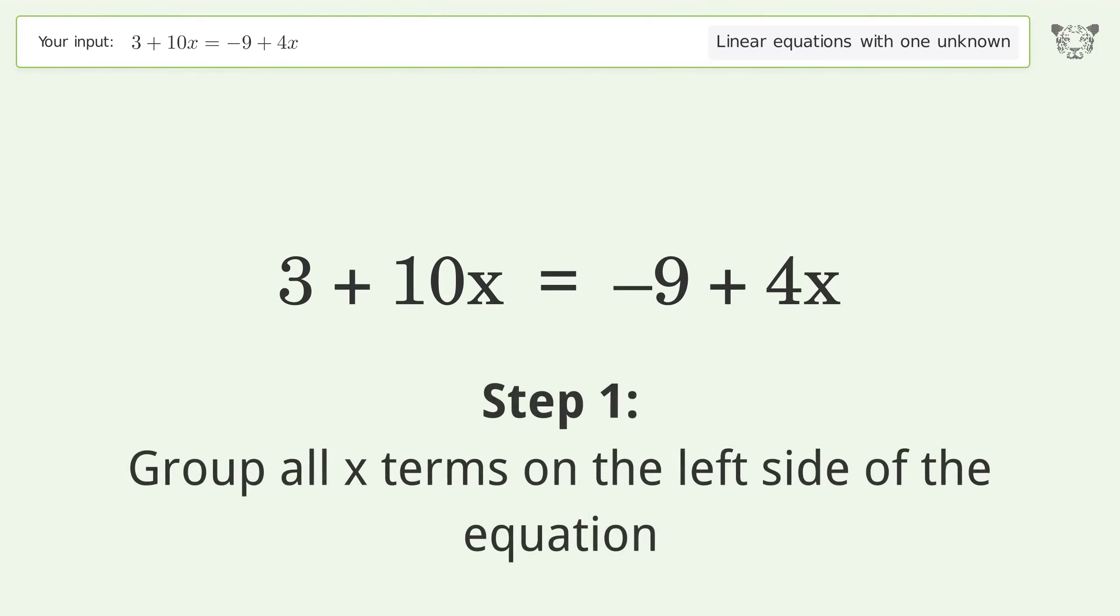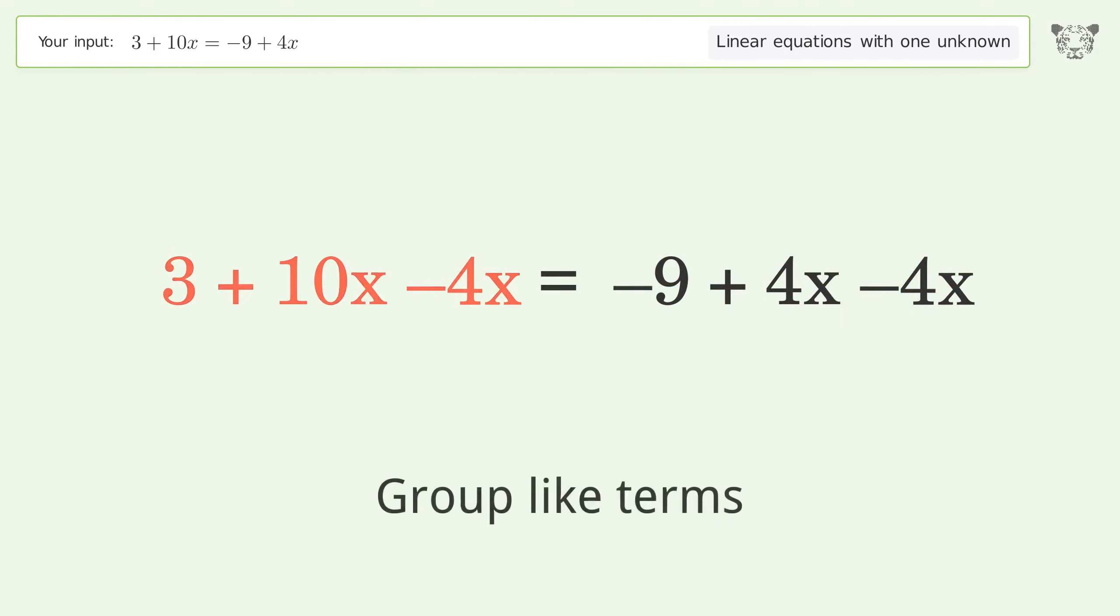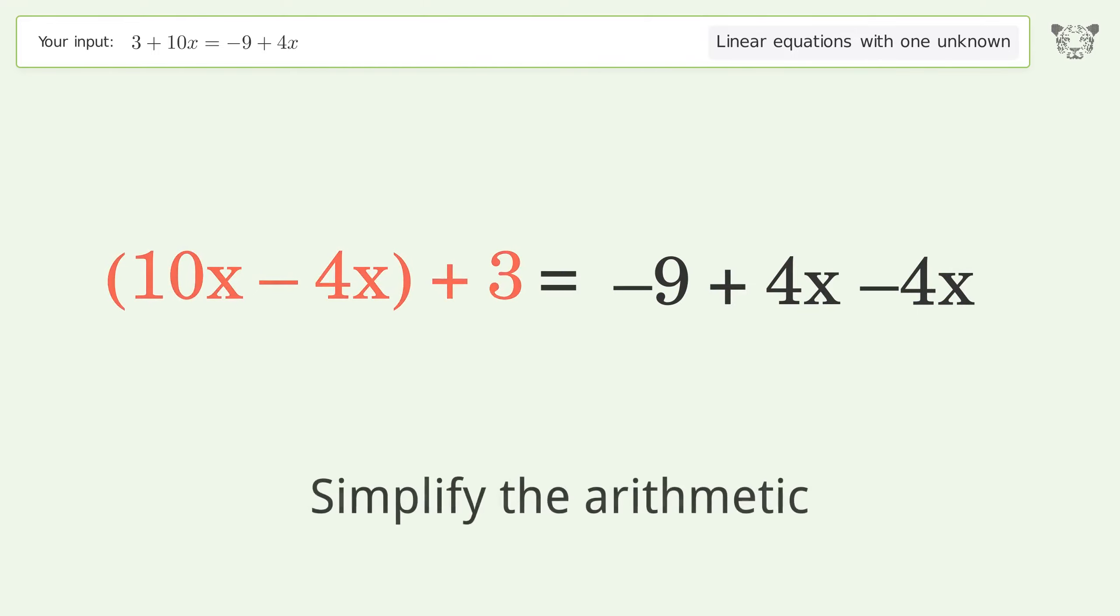Group all x terms on the left side of the equation. Subtract 4x from both sides. Group like terms. Simplify the arithmetic.